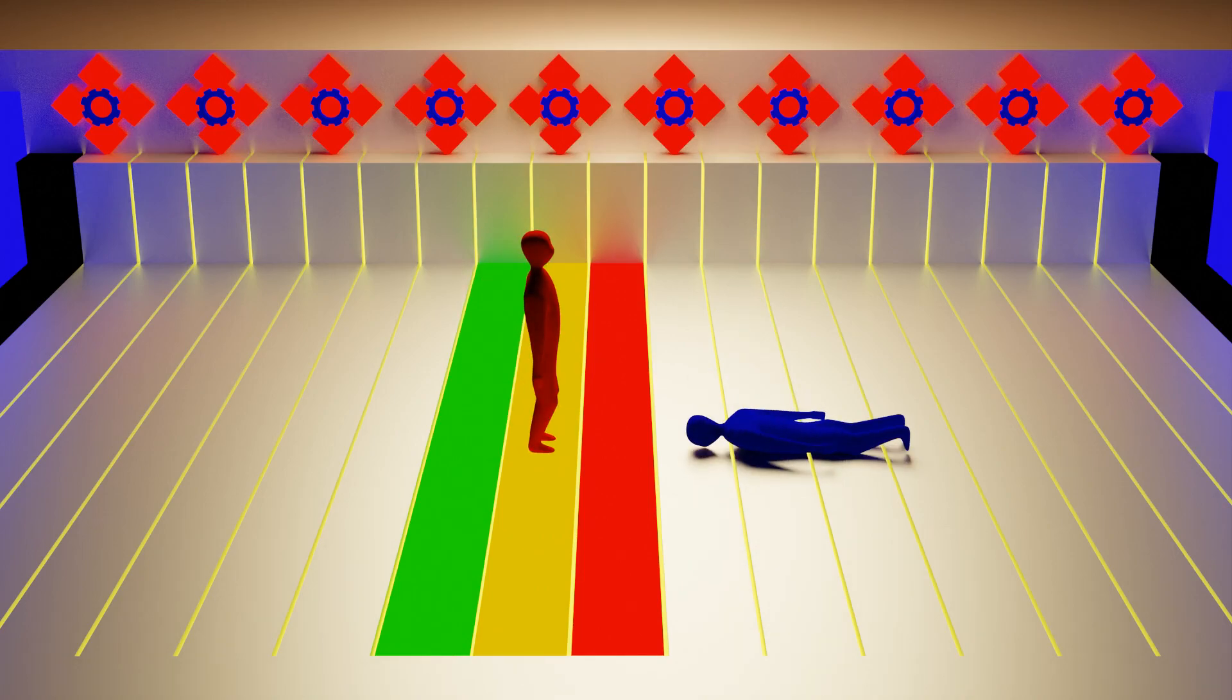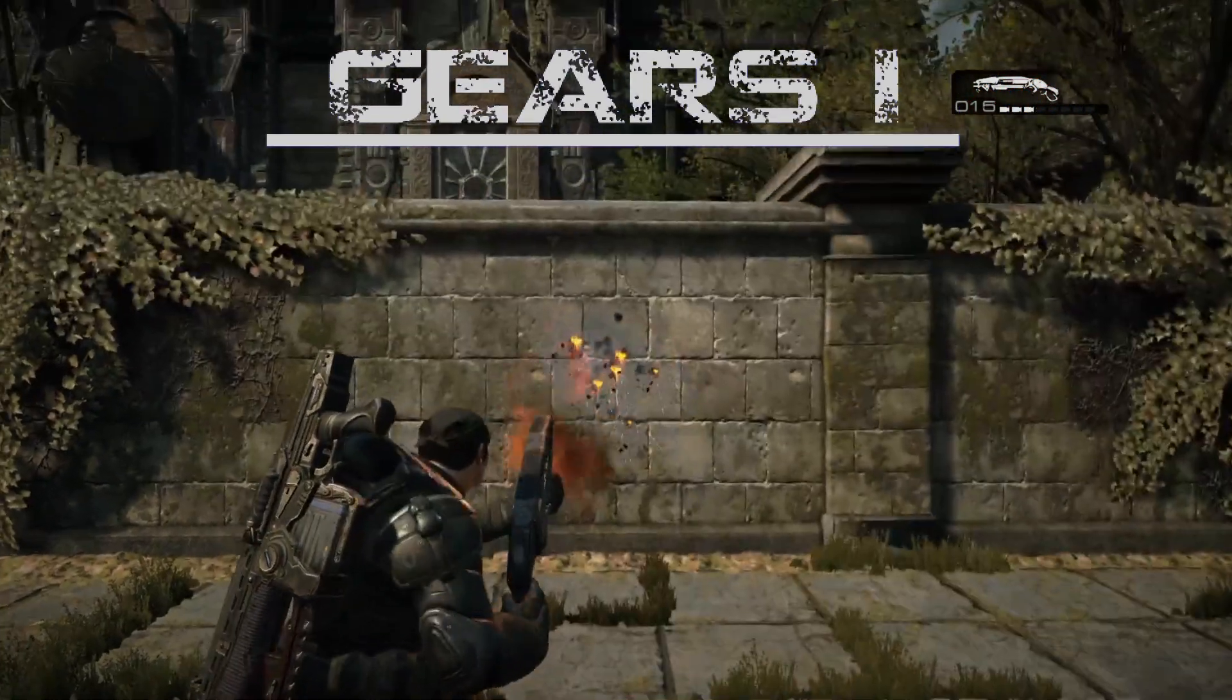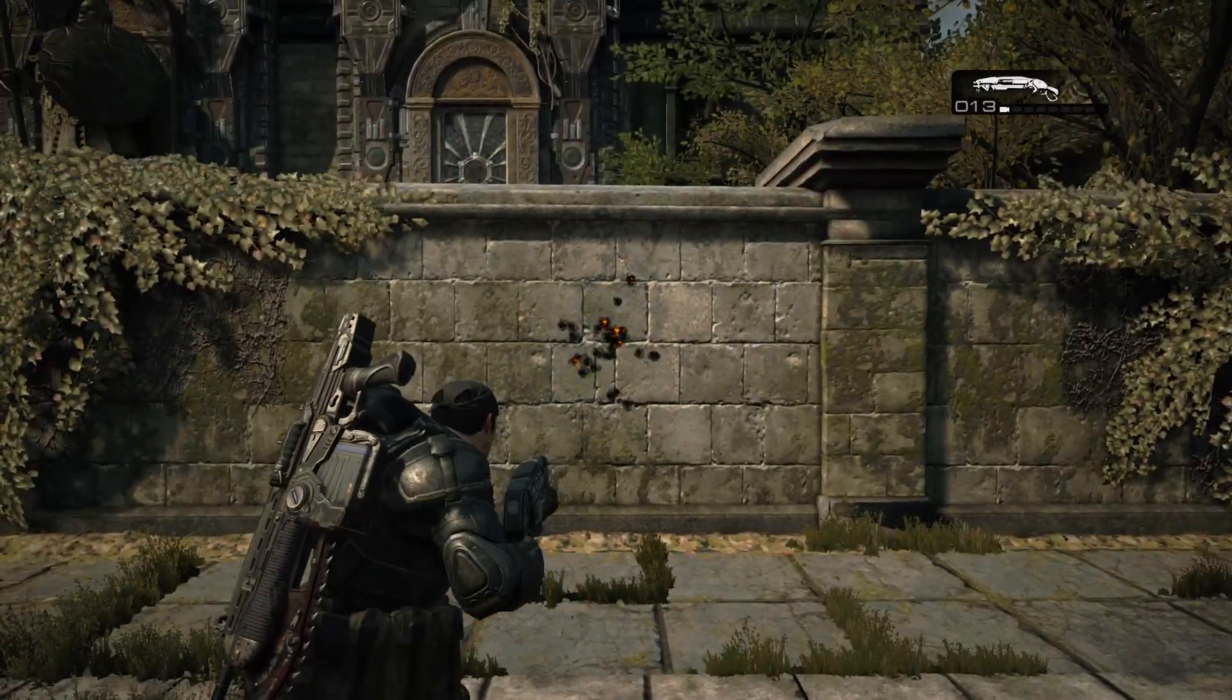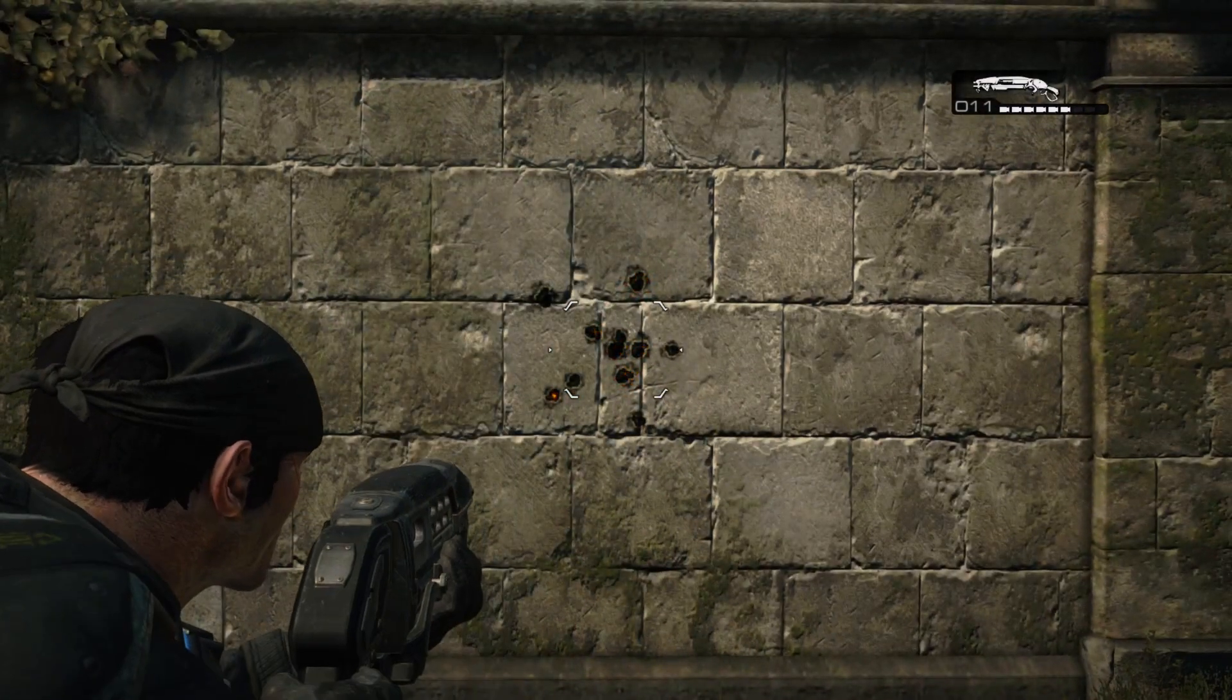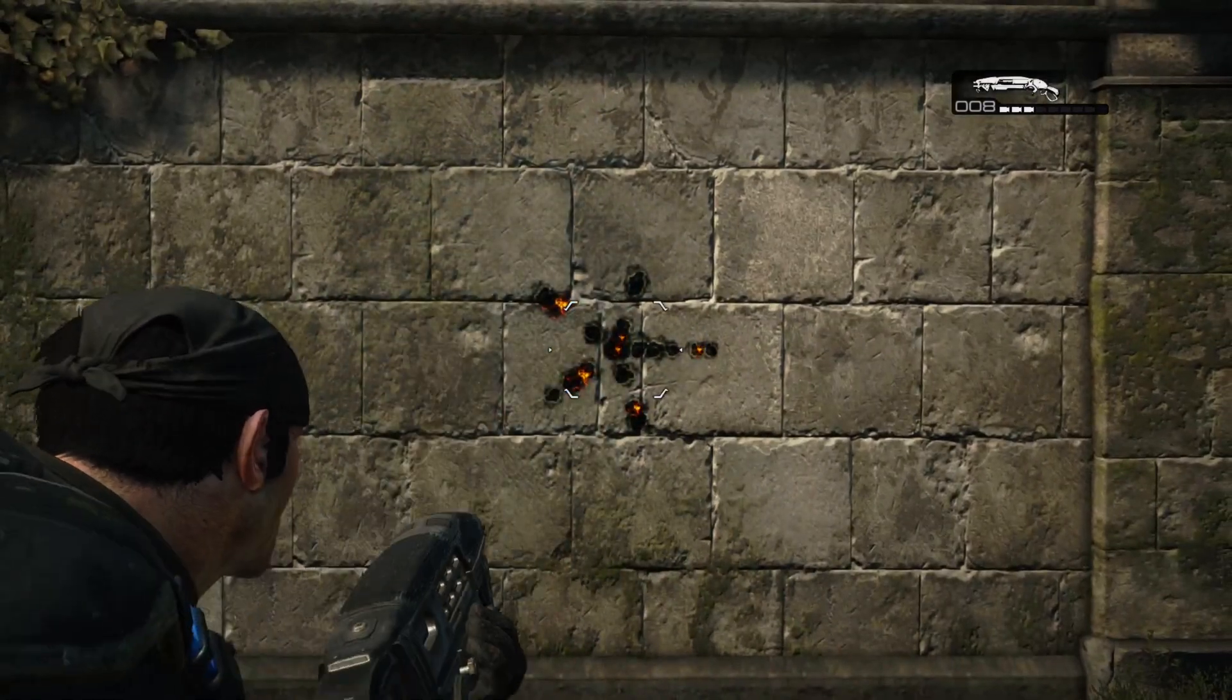This part is moving away from distances and is looking at how the Gnasher fires. Throughout previous Gears titles, aiming would cause the spread to be pulled tighter whereas blind firing would cause a much wider pellet spread. I'll leave this play through now so you can see what I mean.